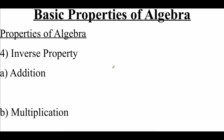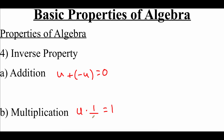Our fourth property is the inverse property. For addition, an inverse is something that when added to a value gives us the additive identity zero. So u plus negative u equals zero — for example, 3 plus negative 3 is zero. For multiplication, we want to get the multiplicative identity of one, so we take u times 1/u. The only thing to be careful of: u cannot be zero, because you can never have zero in the denominator of a fraction.